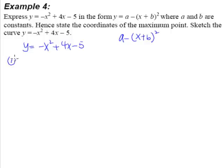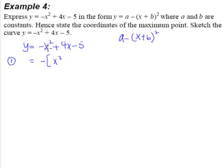The first step will be to make the coefficient of x squared positive 1. As you can see here, the coefficient of x squared is now negative 1. What we have to do as our first step will be to take out the negative 1 so that we have a positive x squared. But because you take out the negative 1 here, every sign inside the bracket will be changed.